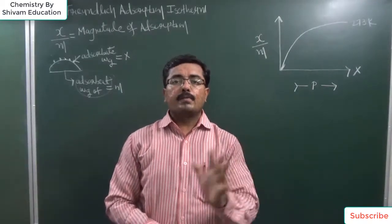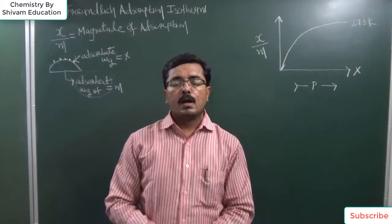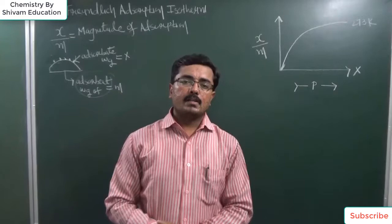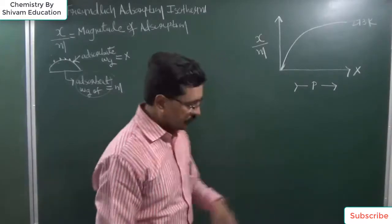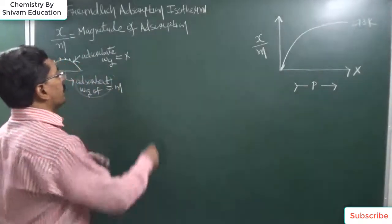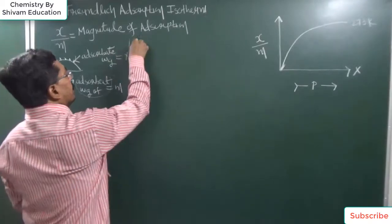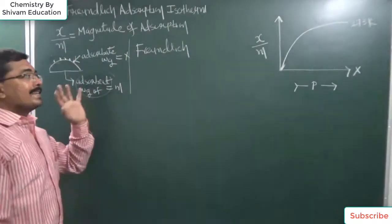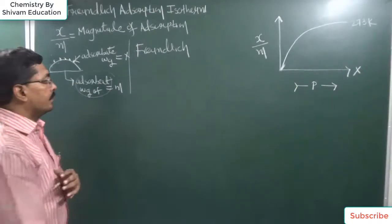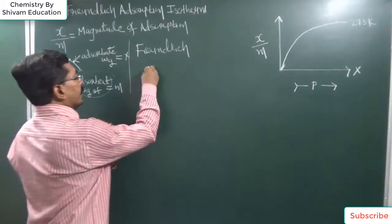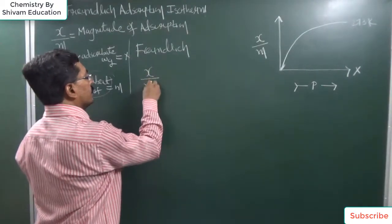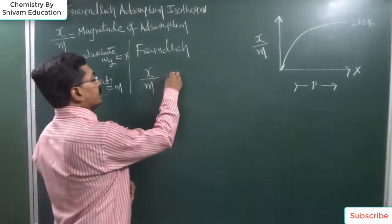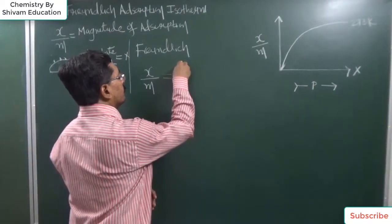Now there are five different types of adsorption isotherms. Out of these, today we have to discuss Freundlich adsorption isotherm. The scientist known as Freundlich gave a relation between pressure and magnitude of adsorption at a constant temperature.